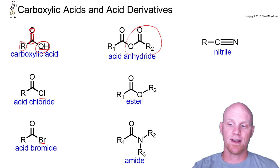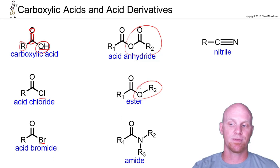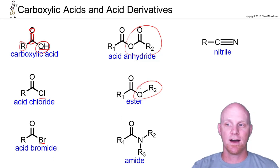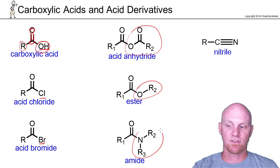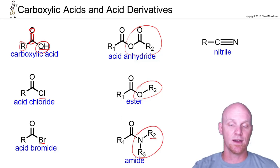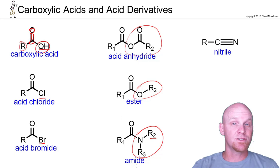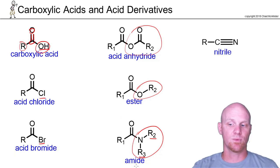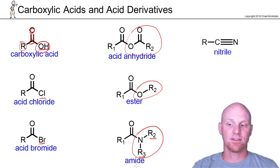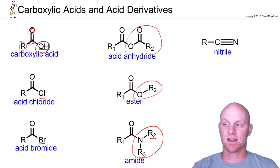We've also got an ester, which has an alkoxide group — the conjugate base of an alcohol — instead of the OH. And then we have an amide, which has an amide group. The two R groups labeled R2 and R3 could be H's, carbon chains, or whatever. That's the difference between primary and secondary amides, or unsubstituted amides as the case may be.